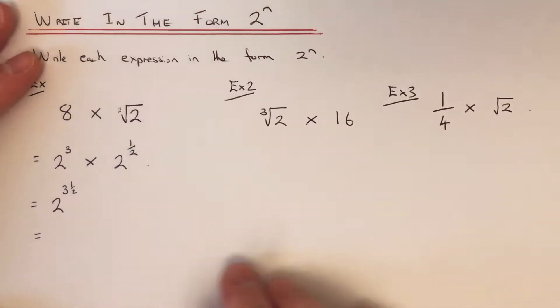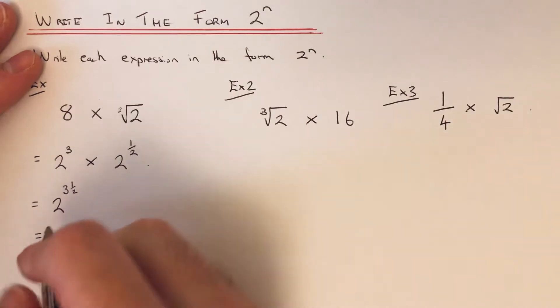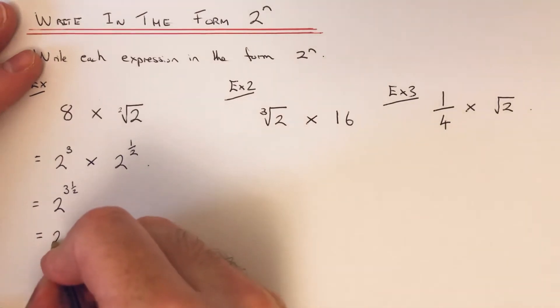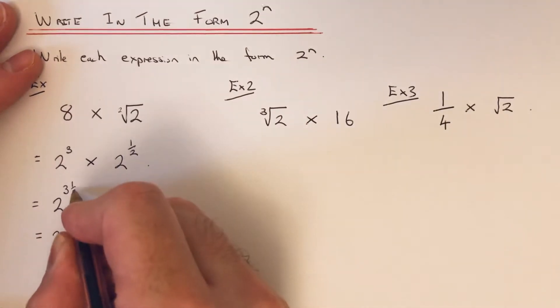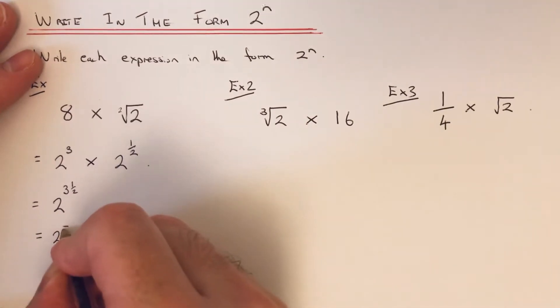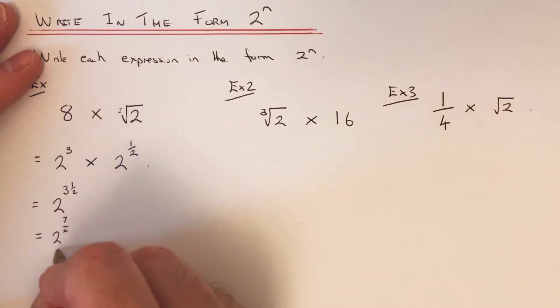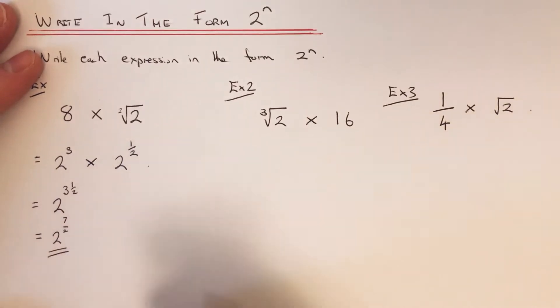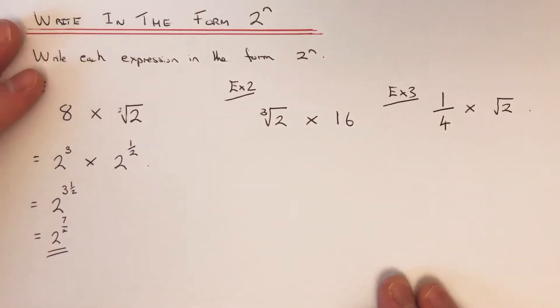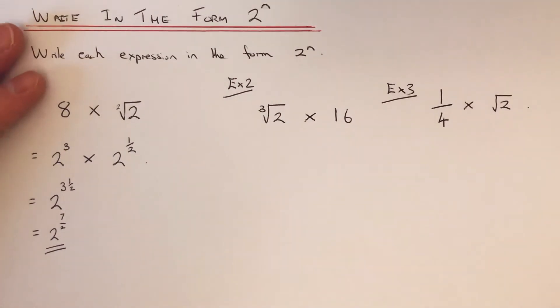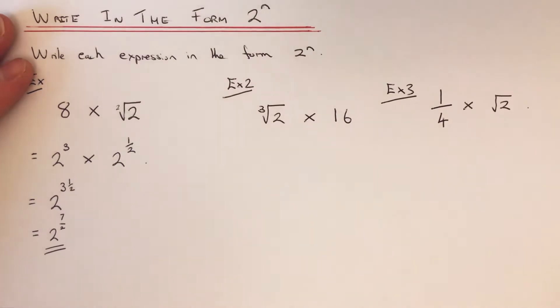You can convert this into an improper fraction if you like. So 2 times 3 is 6, plus 1 is 7. So our final answer is 2 to the power of 7 over 2.